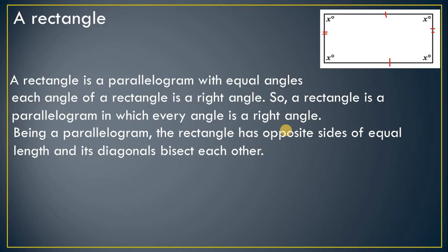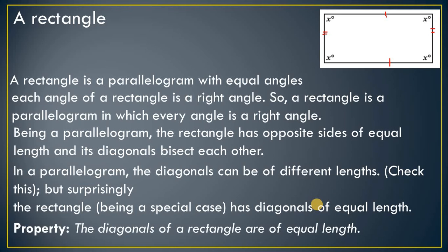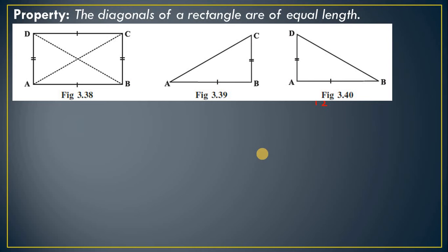Being a parallelogram, the rectangle has opposite sides of equal length and diagonals that bisect each other. However, while a general parallelogram may have diagonals of different lengths, in a rectangle the diagonals are of equal length — this is an important property. We will now prove that the diagonals of a rectangle are of equal length.